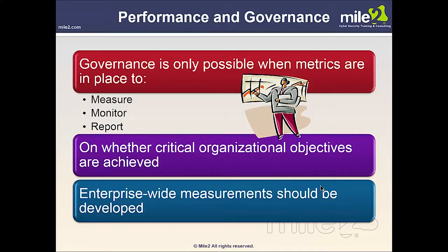When we look at performance and governance, we have to have metrics. It's only possible when metrics are in place to measure, monitor, and report on what we're doing and how well we're doing it — whether critical organizational objectives are achieved. Enterprise-wide measurement should be developed. We don't just make a plan and supposedly follow it without any way of verifying that it is effective.